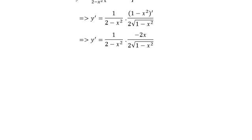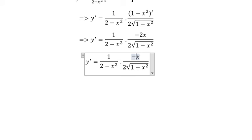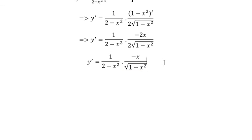Now we simplify. 2 over 2 gives us 1, and we get minus x. The two fractions multiply together to give us the final result.